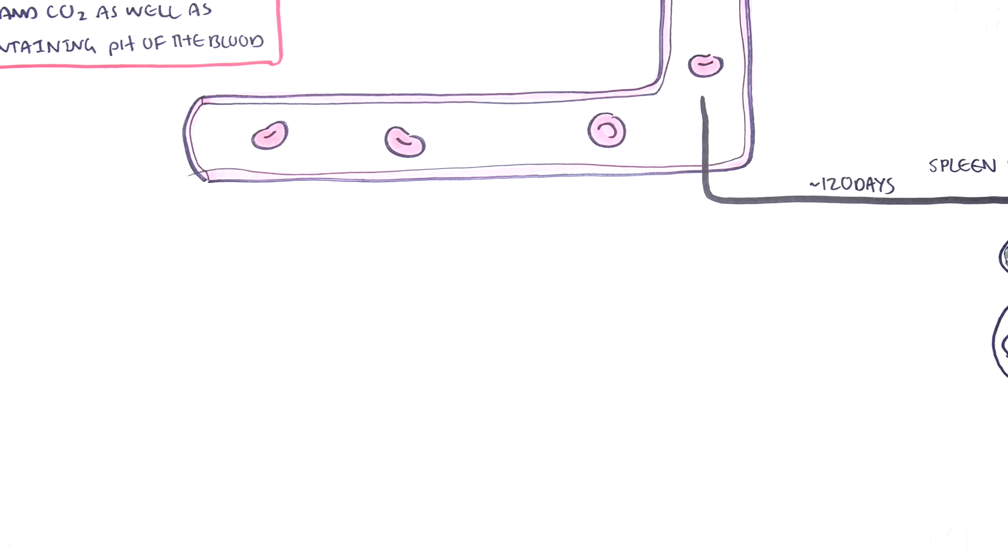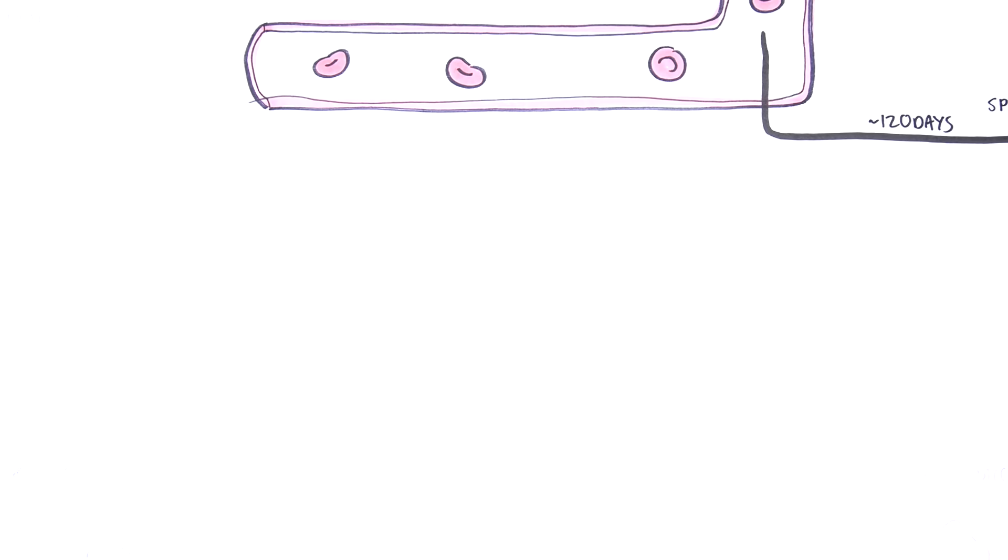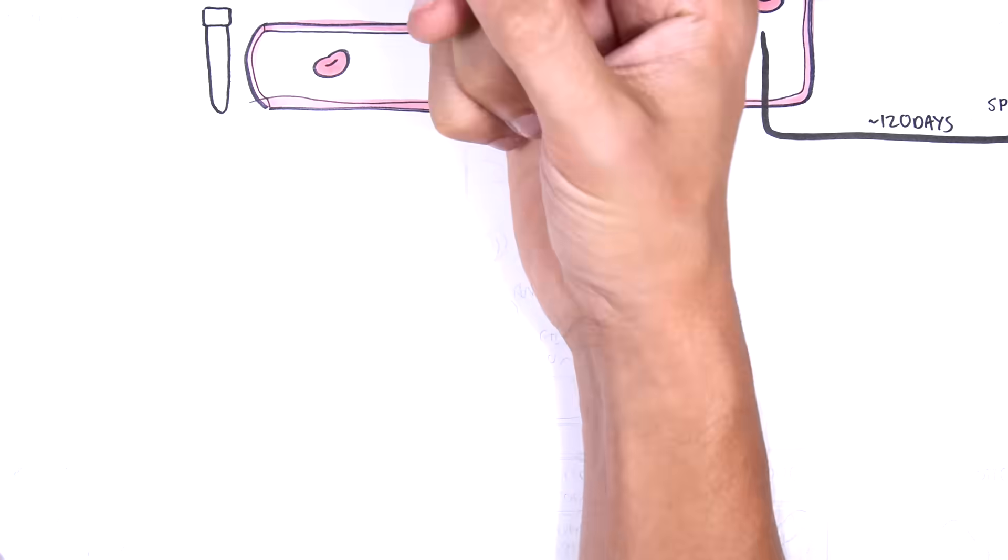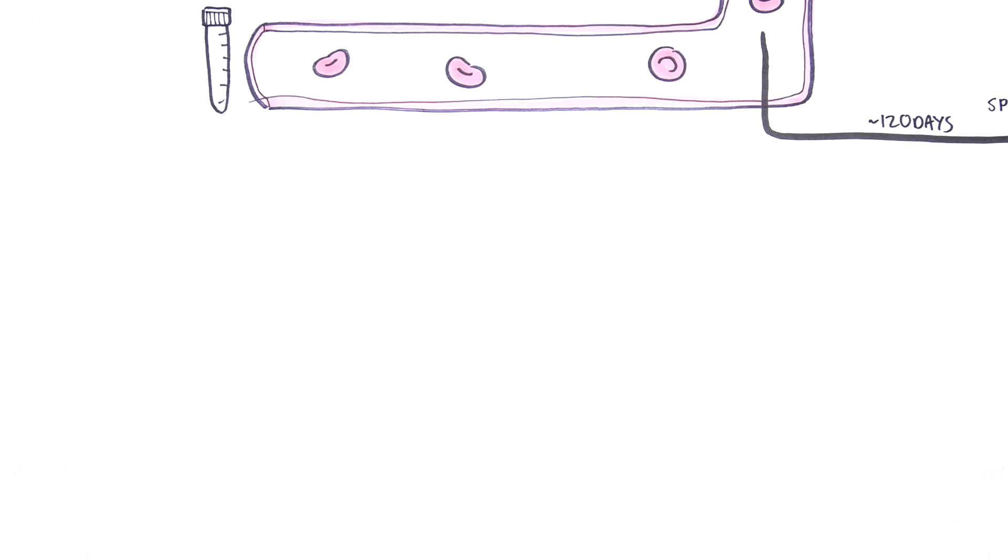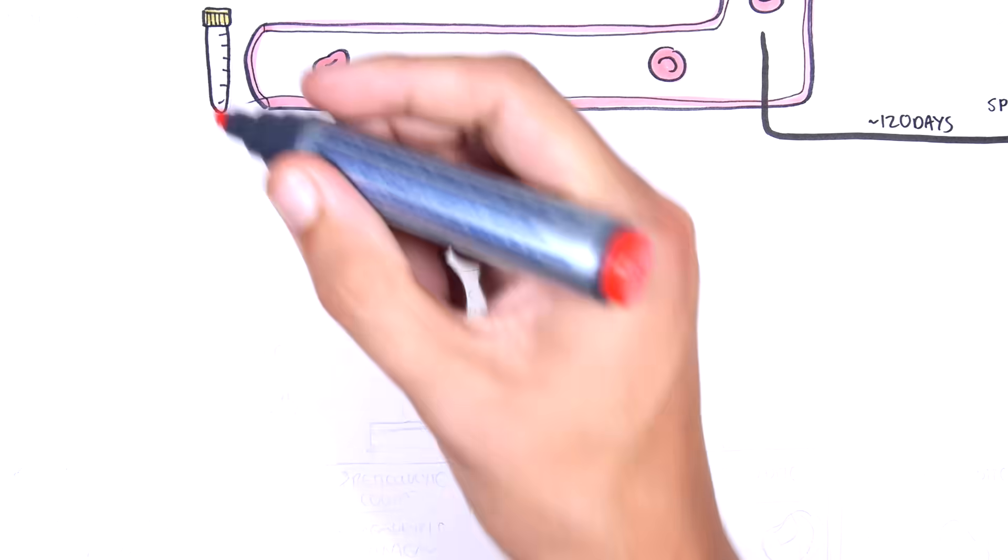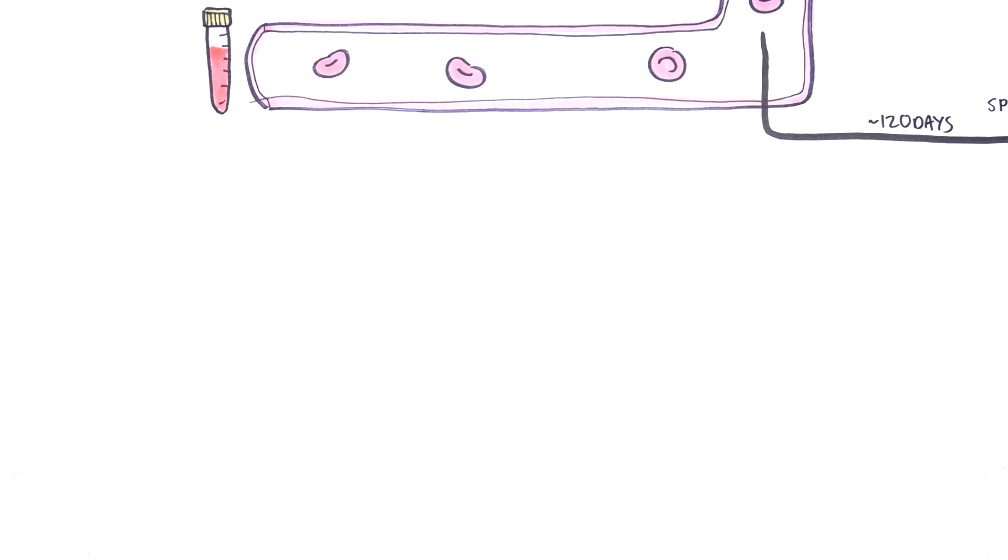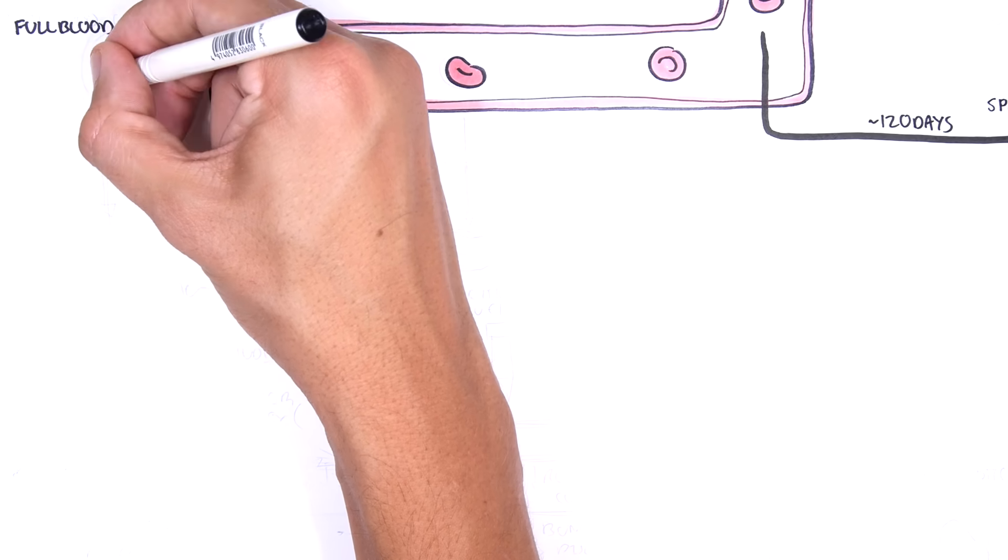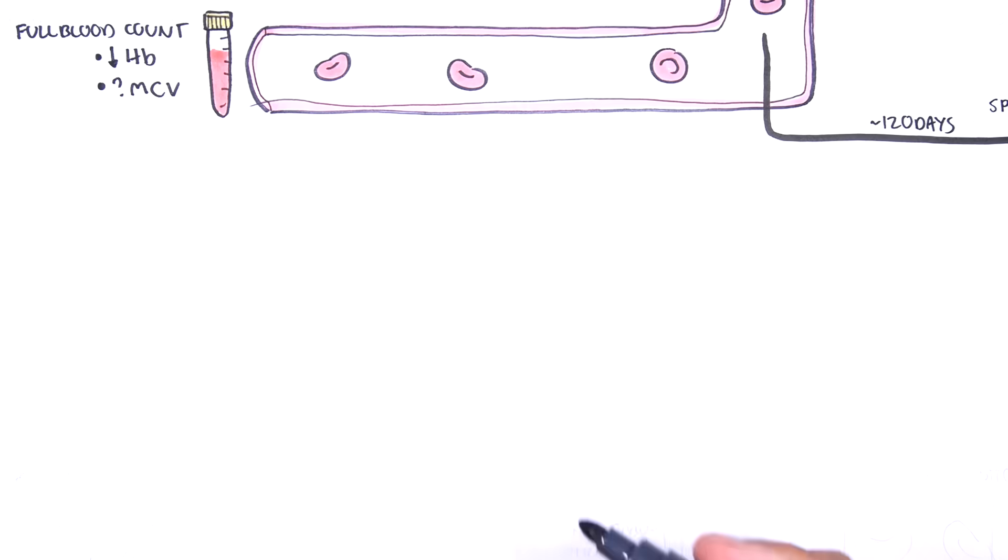When performing a full blood count or complete blood count, looking at hemoglobin is the first step to diagnosing anemia. But how does one categorize anemia? Well, one way is to look at the full blood count first and look at the mean corpuscular volume.